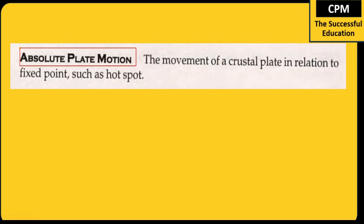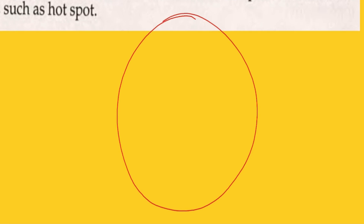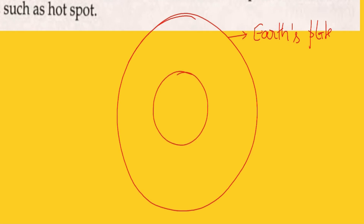Suppose this is our Earth's surface. Here is an Earth's plate, this region is the core, and here it is the mantle. In the mantle region, due to radioactive minerals, hot magma generally forms.